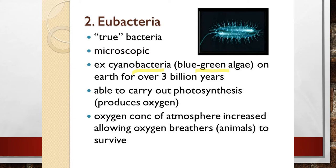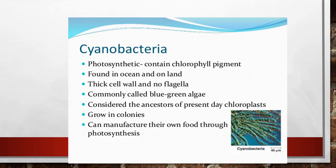The main example of Eubacteria is cyanobacteria, also called blue-green algae, which has survived on the Earth for over three billion years. It is involved in photosynthesis and produces oxygen. The more the amount of cyanobacteria, the more photosynthesis and the more oxygen will be produced, which helps increase the oxygen rate for oxygen breathers to survive on Earth.